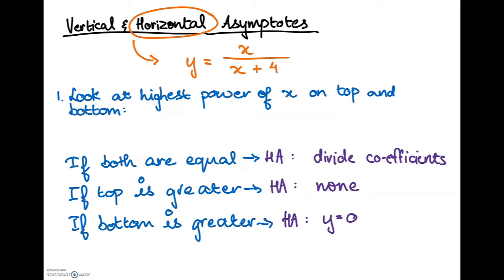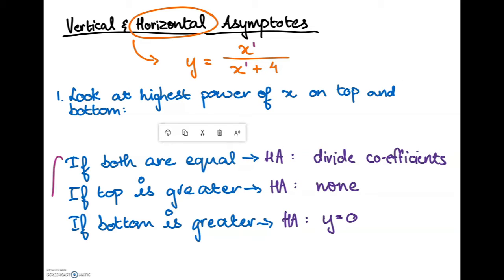Now we're going to talk about the horizontal asymptote. As I said before, it's the imaginary line that goes horizontally. Using the same equation, y equals x over x plus 4: when working with the horizontal asymptote, you have to look at both the numerator and the denominator, specifically the highest power of x on the top and the highest power of x on the bottom. On the top we have x to the power of 1, and the same goes for the bottom — also x to the power of 1. You'll need to memorize the rules for working with horizontal asymptotes.